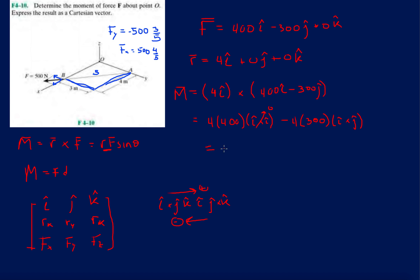Let's apply it here: i cross j. So that's going to be minus 1200k. And that is the moment about point O.